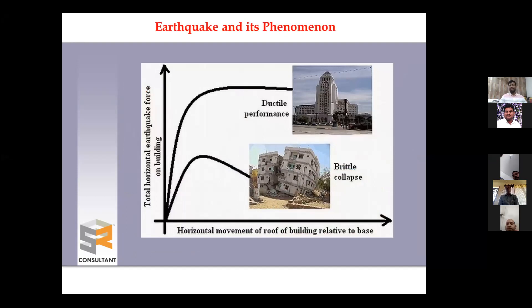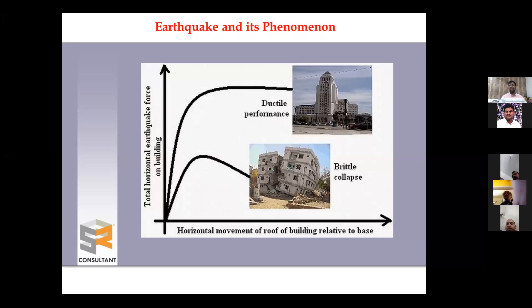If ductility detailing is properly implemented by the contractor on site, the structure will be safe and sound. If such detailing is not used, there may be scope for brittle failure or collapse. This is illustrated through a simplified ductile and brittle material stress-strain graph.